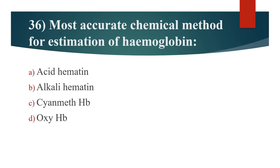36th question: Most accurate chemical method for estimation of hemoglobin? Option A: Acid hematin. Option B: Alkali hematin. Option C: Cyanmethemoglobin. Option D: Oxyhemoglobin. Answer is Option C: Cyanmethemoglobin.